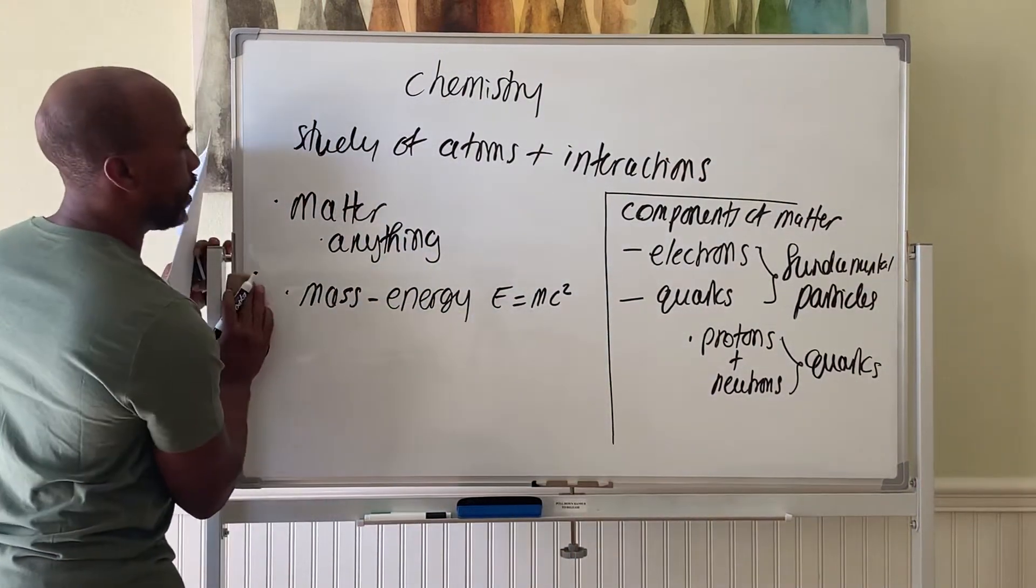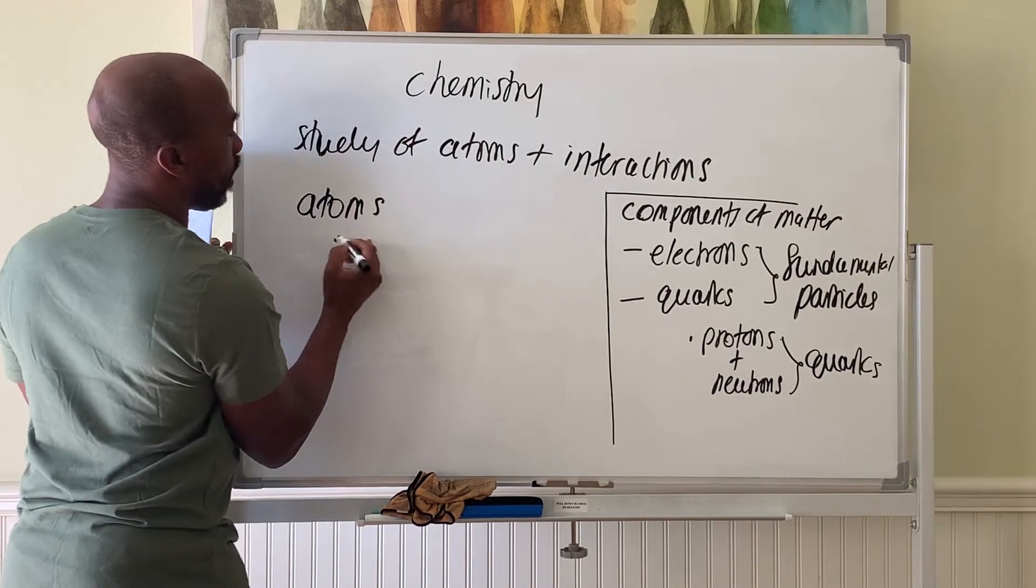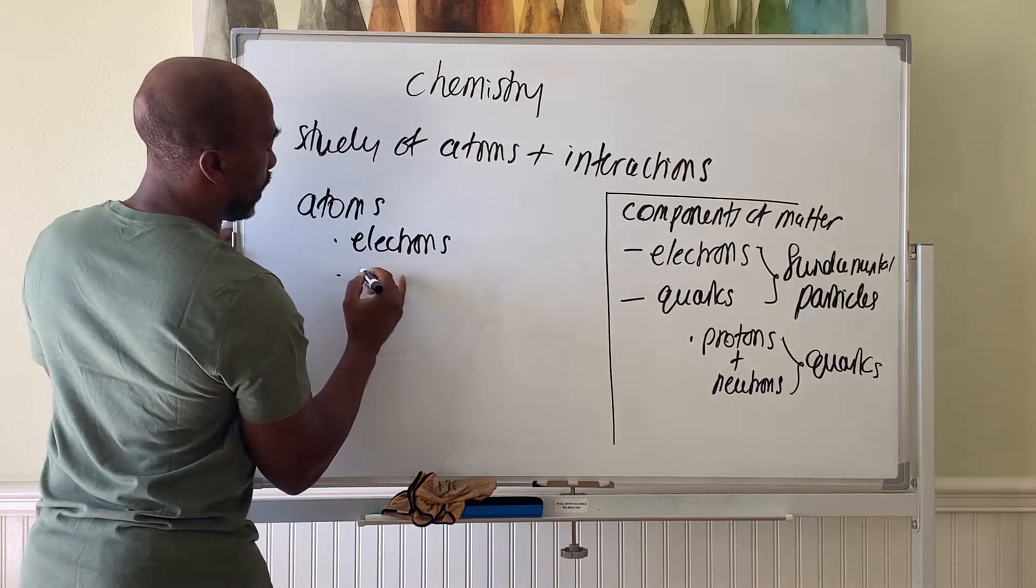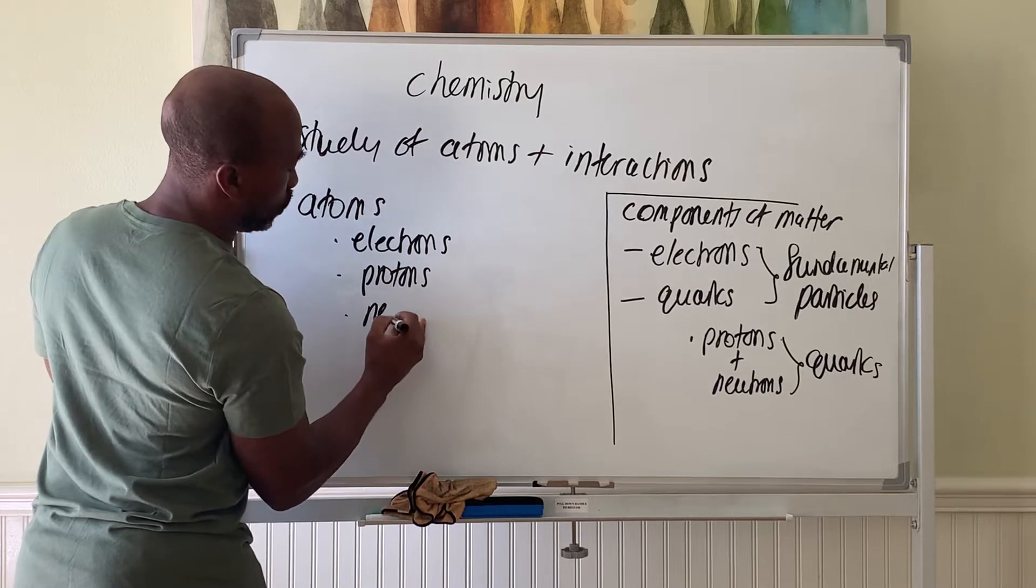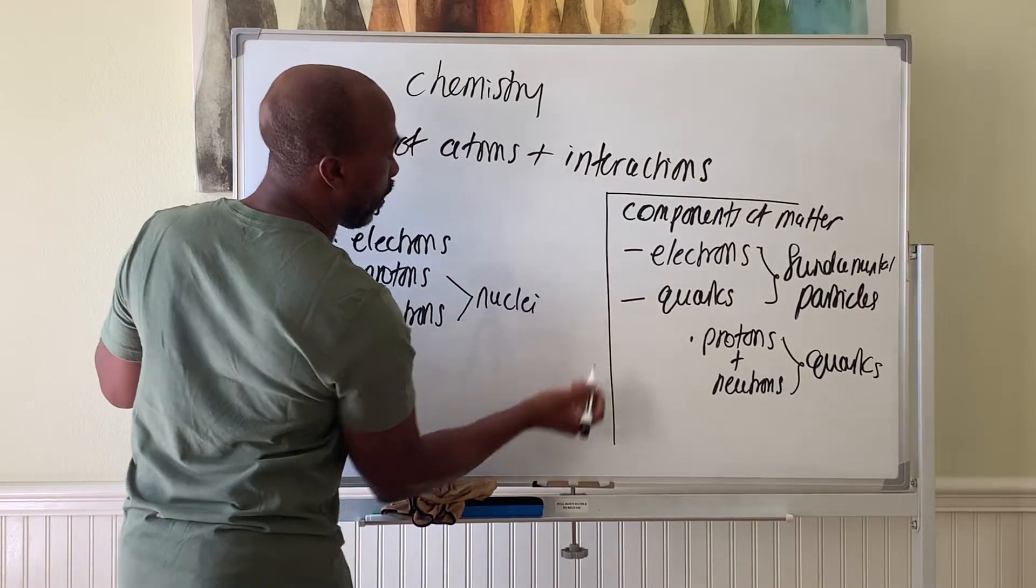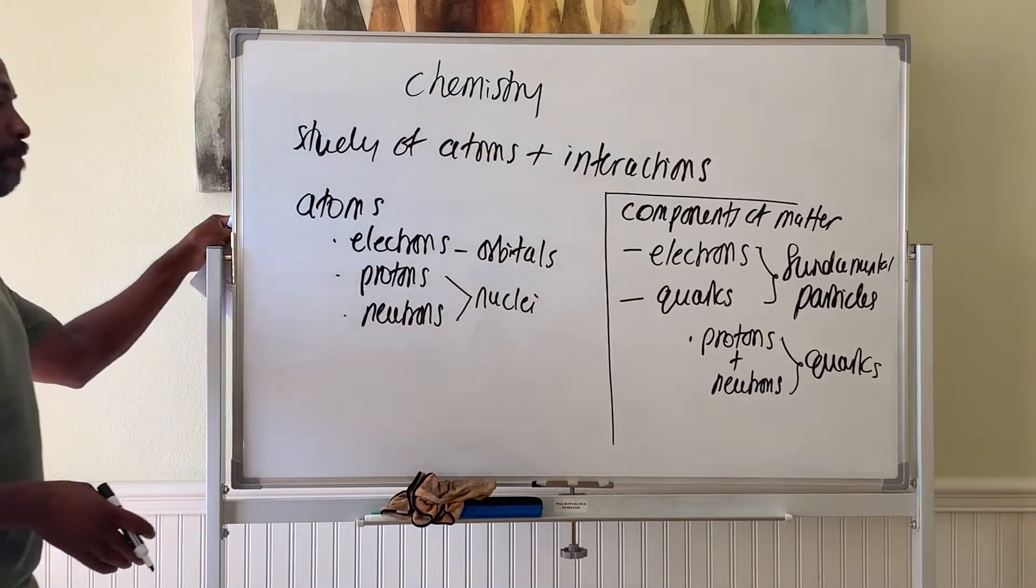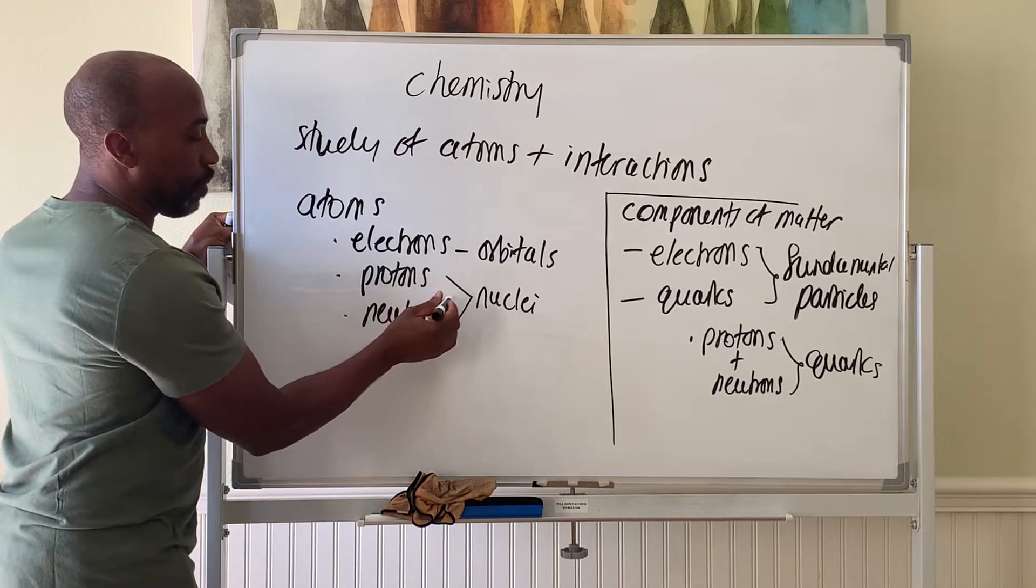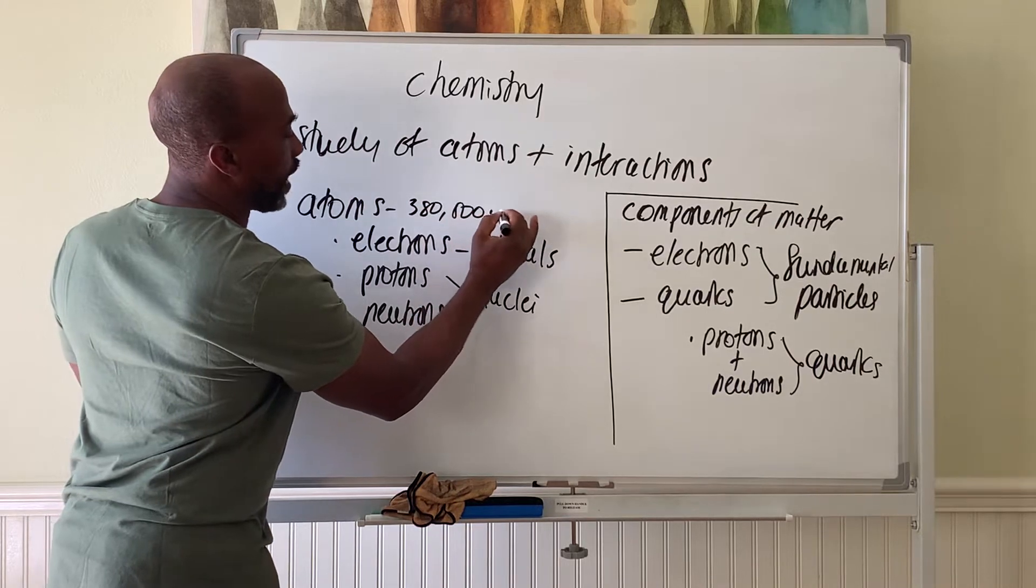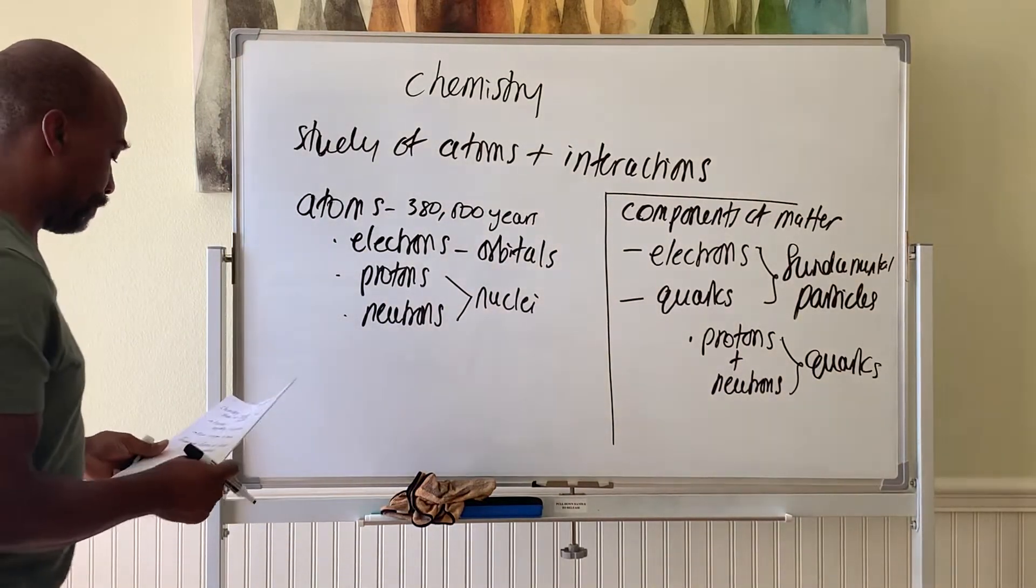So atoms are formed from the combination of electrons, protons, and neutrons. These two things are found in the nucleus or nuclei of the atom, and electrons orbit in orbitals around the nuclei. These formed pretty quickly after the big bang, but the atoms were formed about 380,000 years after the big bang. That's when you've formed your first atoms.